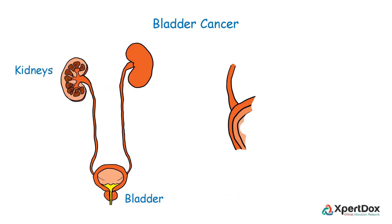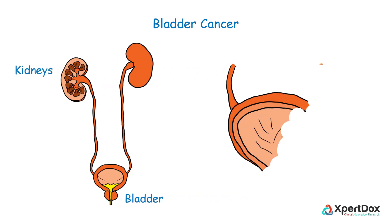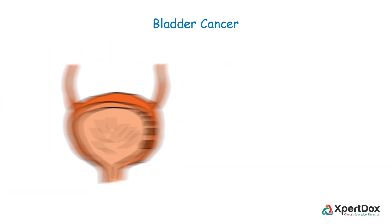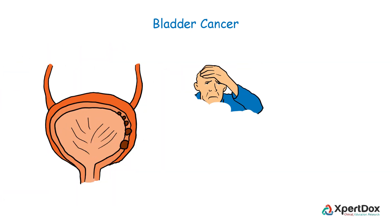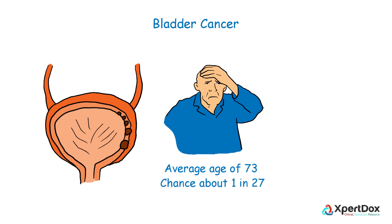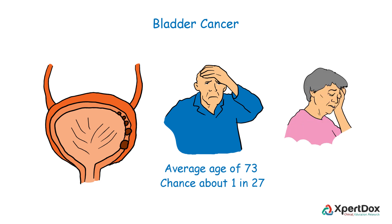Bladder cancer is a disease in which cancerous cells form in the tissues of the bladder. The average age at the time of bladder cancer diagnosis is 73. Overall, the chance men will develop this cancer in their life is about 1 in 27. For women, this possibility is about 1 in 89.